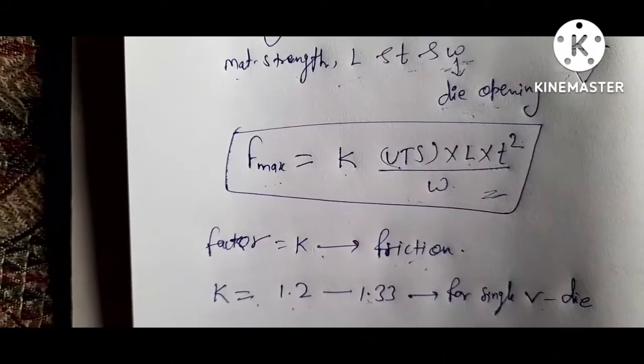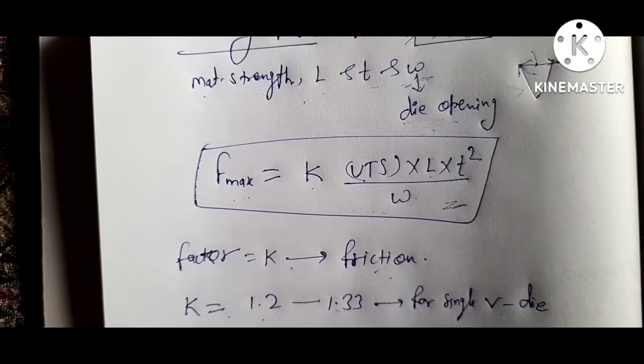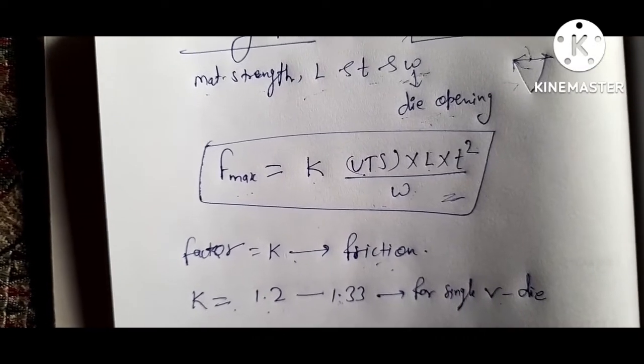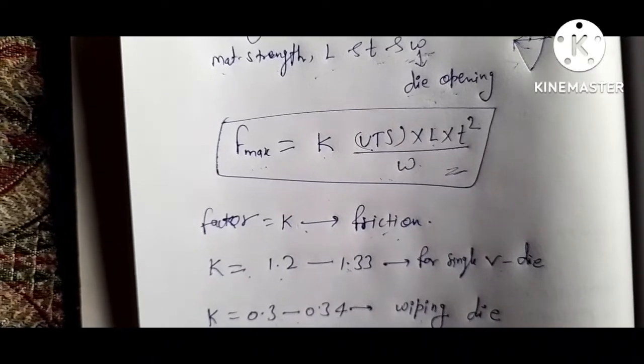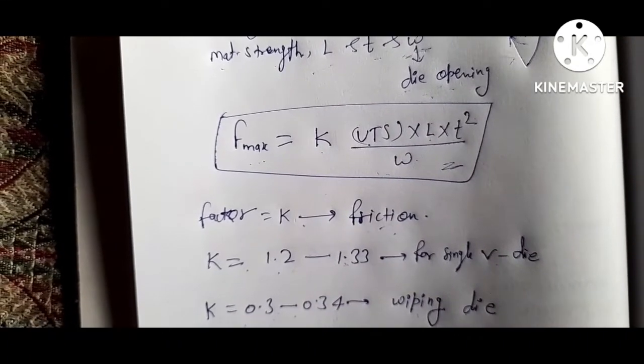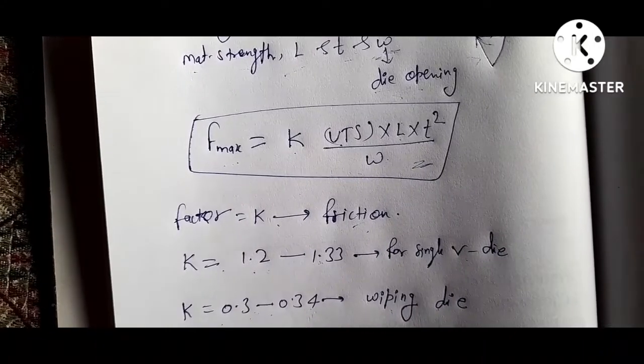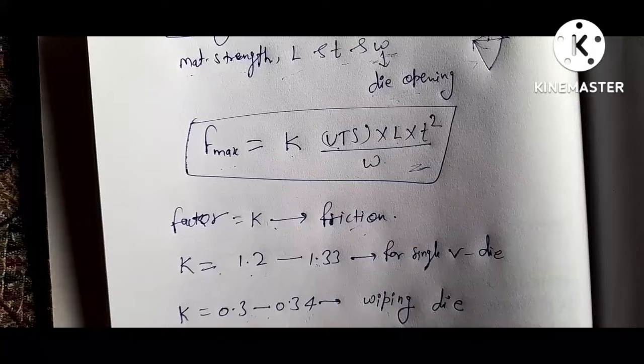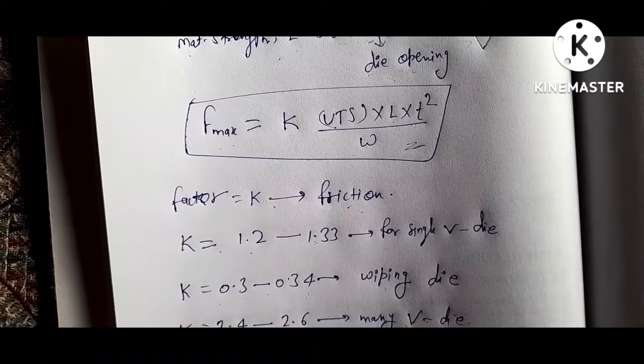The bending force is also a function of punch travel. Punch travel increases from zero to the maximum and then decreases as the bend is completed. It then increases sharply as the punch bottoms in the case of die bending. In air bending or free bending, however, the force does not increase again after it begins to decrease.